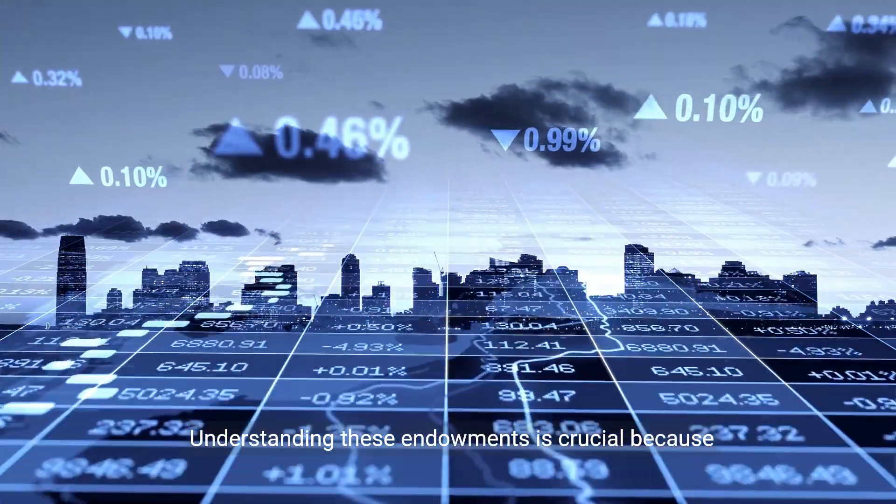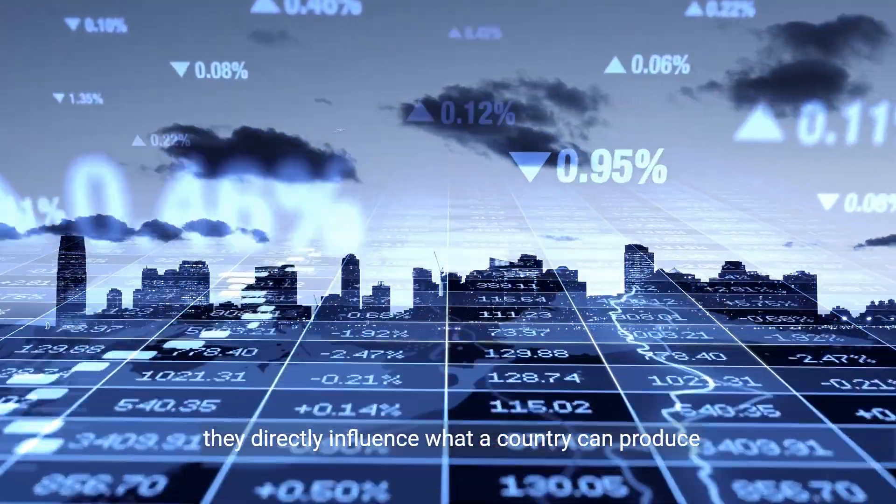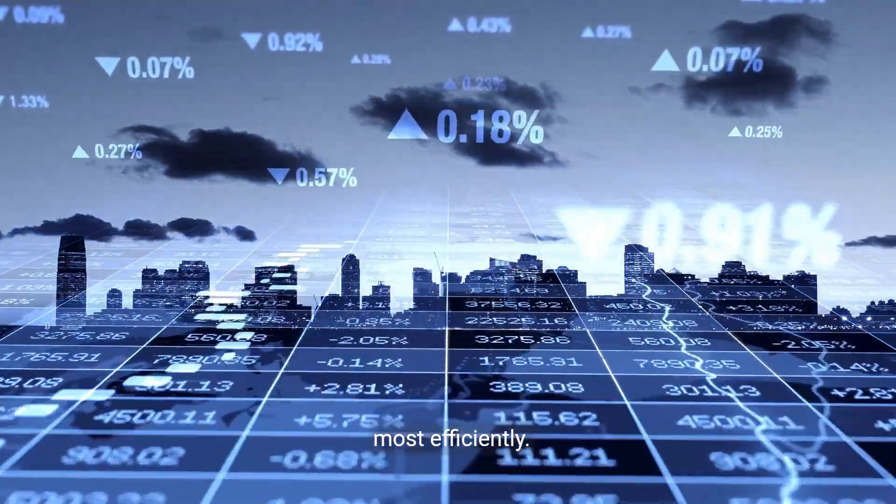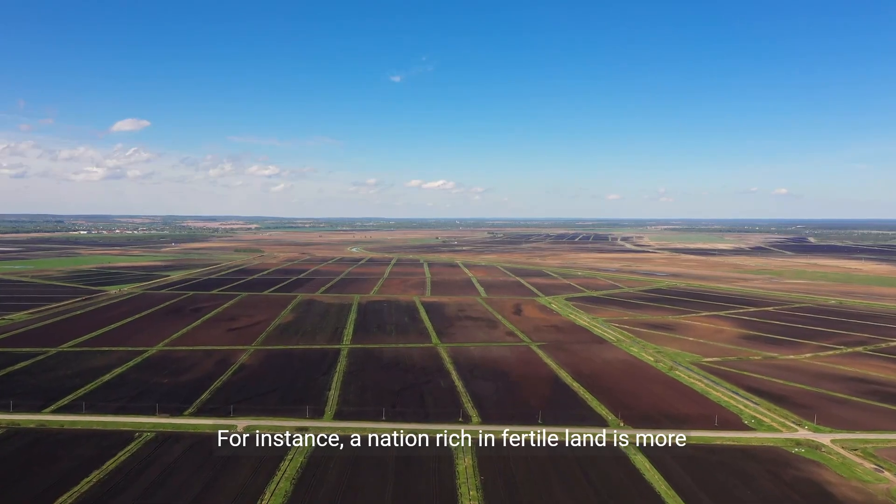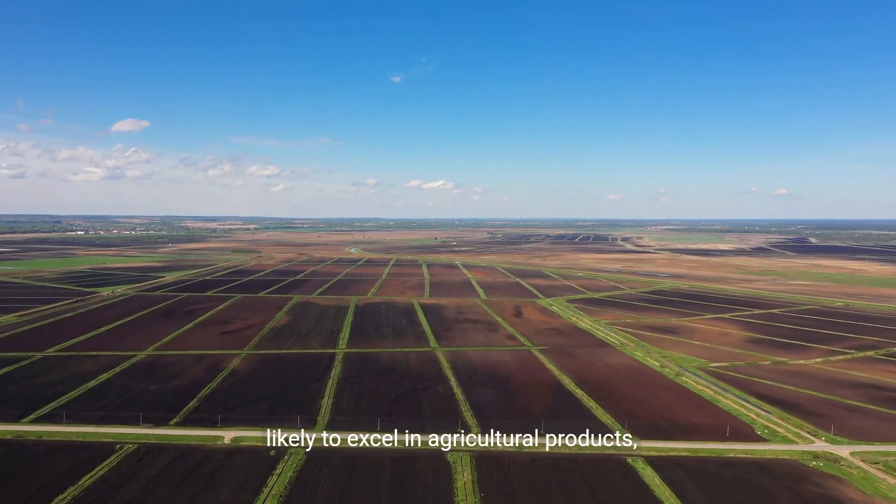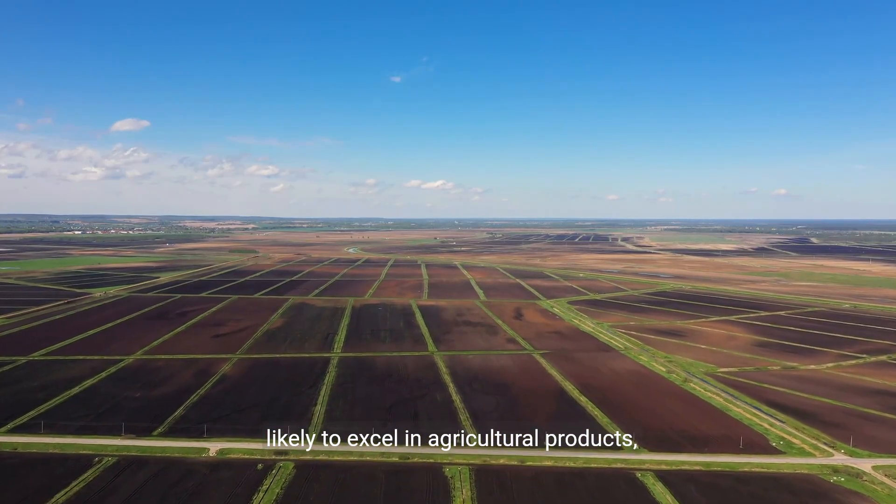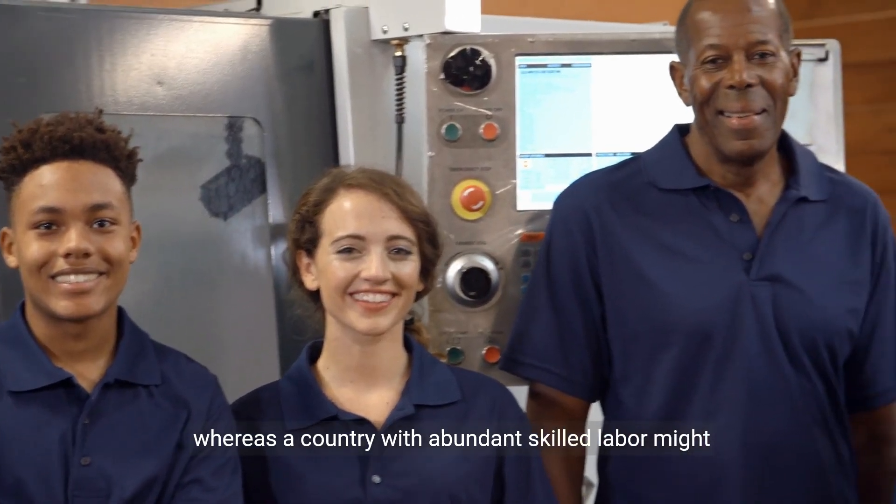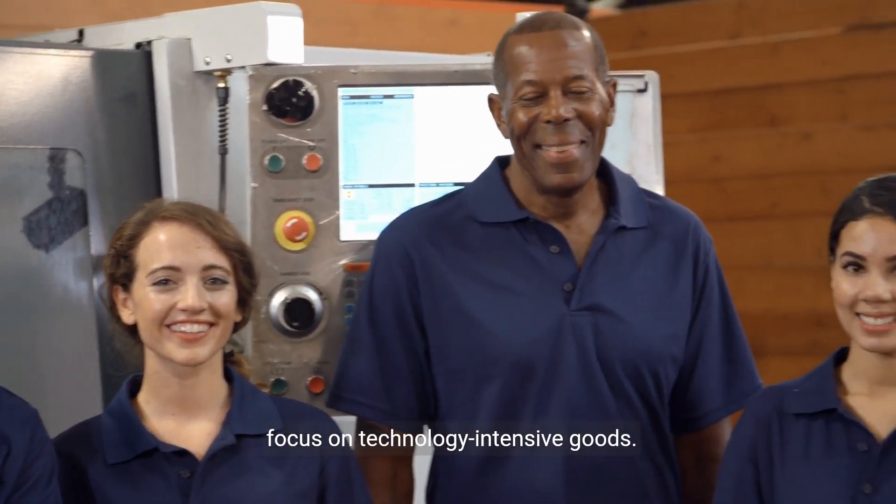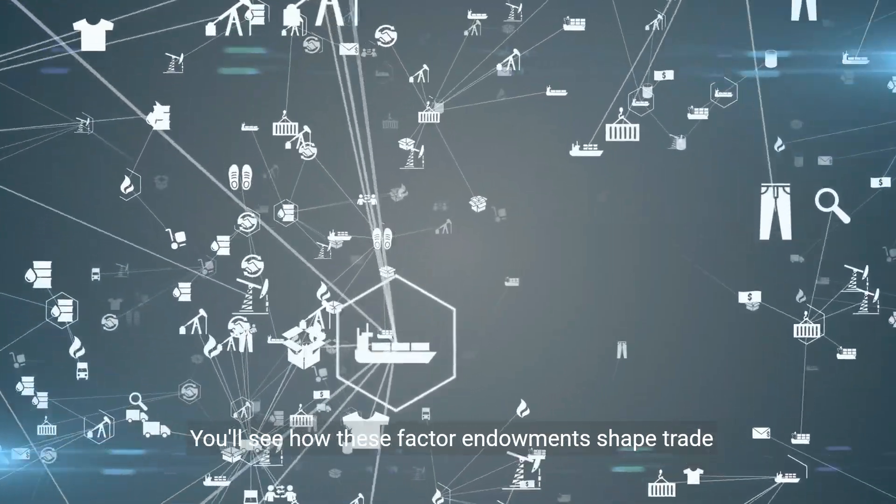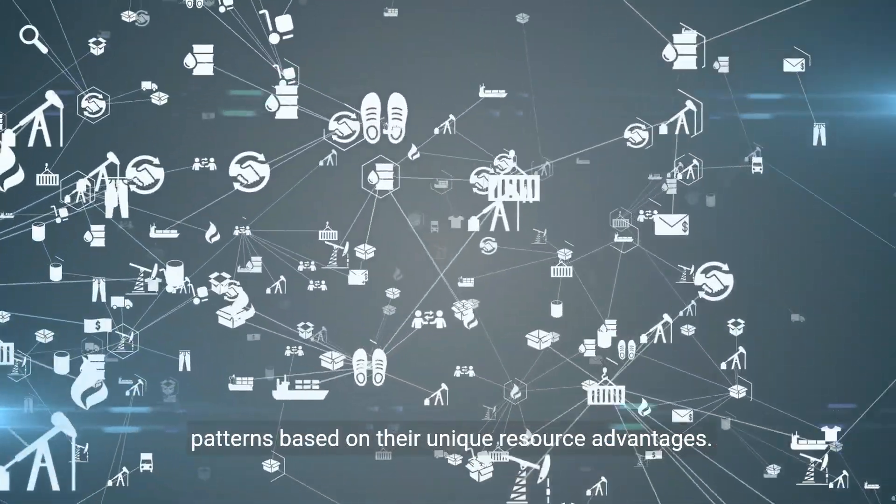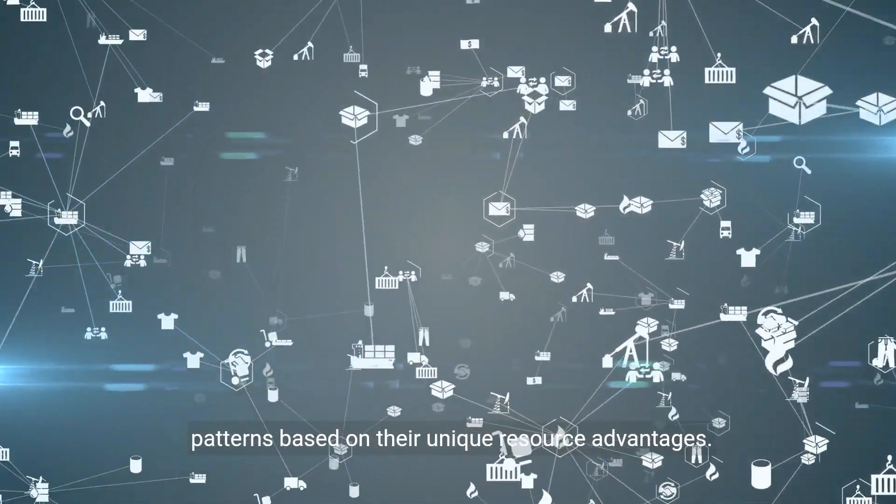Understanding these endowments is crucial because they directly influence what a country can produce most efficiently. For instance, a nation rich in fertile land is more likely to excel in agricultural products, whereas a country with abundant skilled labor might focus on technology-intensive goods. You'll see how these factor endowments shape trade patterns based on their unique resource advantages.